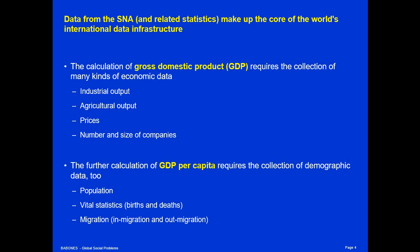The further calibration of GDP per capita — GDP per person — requires the collation of GDP data with demographic data. If you want to know GDP per capita, you have to know the population, and in order to know the population, you have to know vital statistics like births and deaths. You also have to know how many people are moving in and out. So GDP per capita includes economic data from the system of national accounts and demographic data from censuses and intercensus surveys.